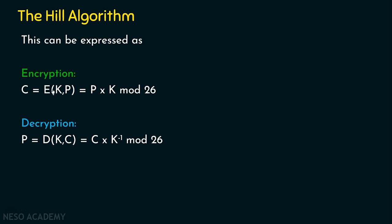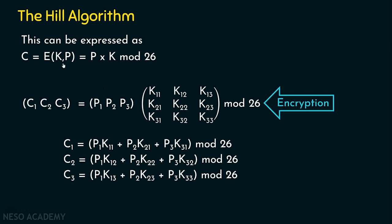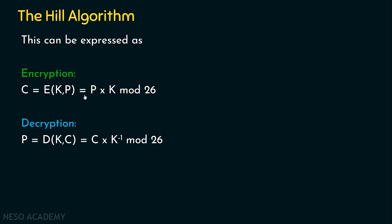Let's quickly run through the encryption process. The ciphertext is the product of the plaintext matrix multiplied by the key matrix modulo 26 — a simple, straightforward operation. If it is a 3×3 key matrix, we encrypt 3 plaintext letters at a time, getting 3 ciphertext letters (c1, c2, c3). So encryption is simple matrix multiplication: ciphertext equals plaintext matrix times key matrix mod 26.